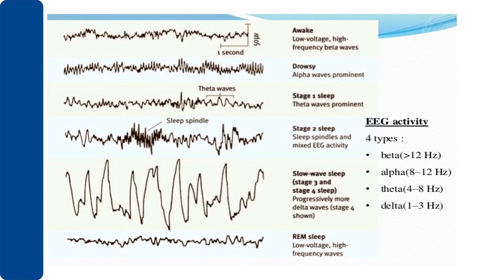This picture shows the EEG recording of an awake state and the sleeping stages. In the awake stage, there are low voltage, high frequency beta waves which are more than 12 Hz in frequency. In the drowsy state, alpha waves become prominent at 8 to 12 Hz. Stage 1 sleep shows theta waves. Stage 2 shows sleep spindles and mixed EEG activity. Stages 3 and 4 are slow wave sleep, with waves progressively increasing in amplitude and decreasing in frequency — these are delta waves.